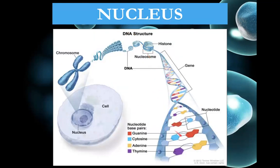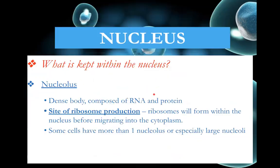The DNA forms a double helix and wraps around histone proteins, which get wound up even more. The fully condensed chromosome is not something we would normally see except during mitosis. The nucleolus is the really dense, dark part of the nucleus and is composed of RNA and proteins — it is where ribosomes are produced. They're produced in the nucleolus and then sent out into the cytoplasm.